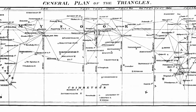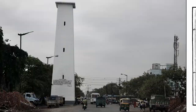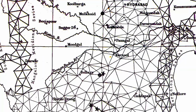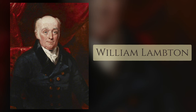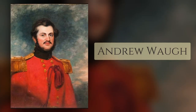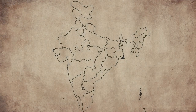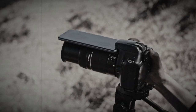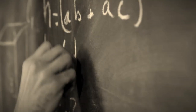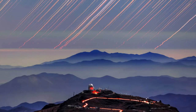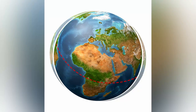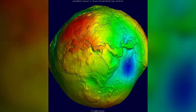By 1806 the survey had reached the other coast. Determining point after point, triangle after triangle, the survey carried on for decades under William Lambton, then George Everest, then Andrew Waugh, and then James Walker. India is so huge that simply noting angles and applying the law of sines wasn't sufficient — calculations were affected by the curvature of the Earth, refraction of light in the atmosphere, and irregularities in the curvature of the Earth and gravitational field.